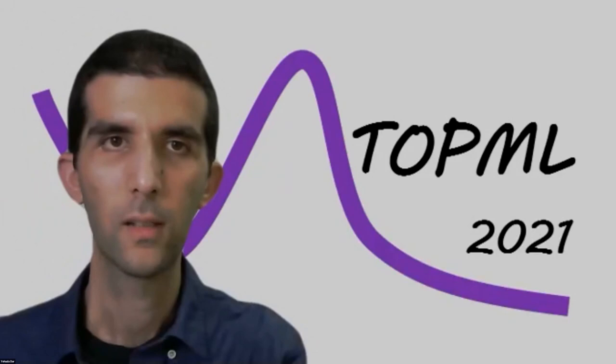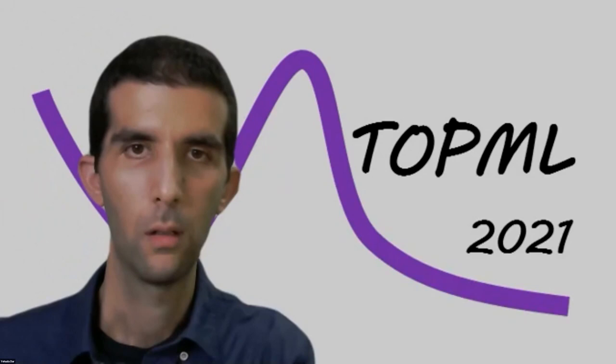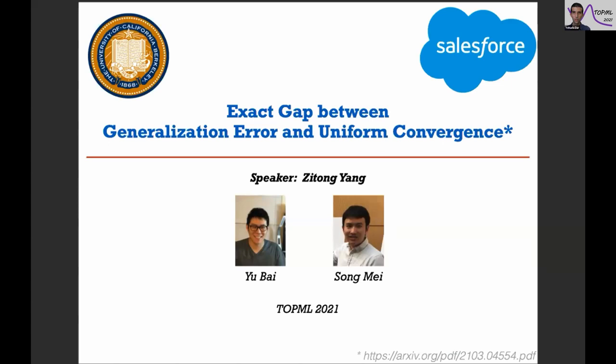The next lightning talk is by Jitong Yan from Berkeley, on the exact gap between generalization error and uniform convergence in random feature models. Jitong began: Thanks everyone for coming. In the next five minutes, I will talk about my recent work with Yubai from Salesforce and Sumay from Berkeley. The paper is available online.